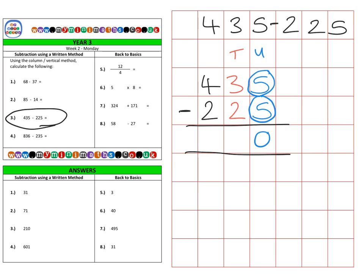Then looking at the tens: we have three tens, which is 30, take away two tens, which is 20, for a single ten. And finally in the hundreds column, we have four hundreds take away two hundreds, leaving us with 200, for a final answer of 210.